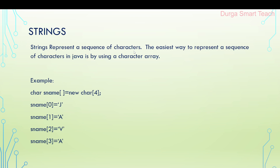A character is nothing but either one alphabet, a digit, or a special symbol. Characters are represented in single quotations and strings are represented in double quotations. So a collection of characters is nothing but a string.